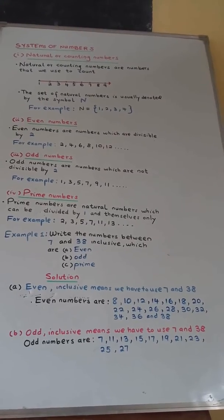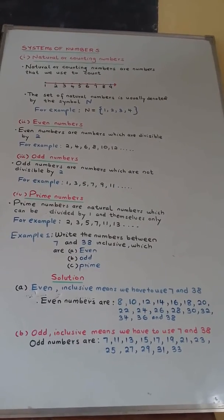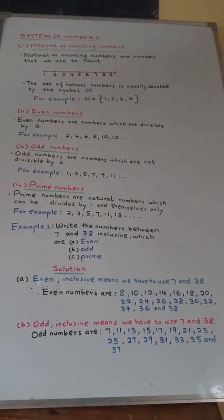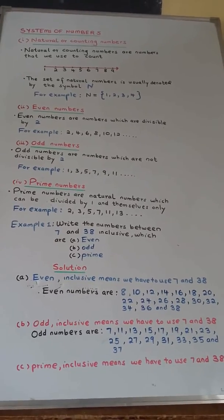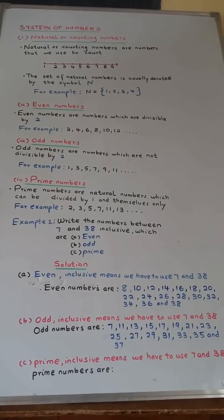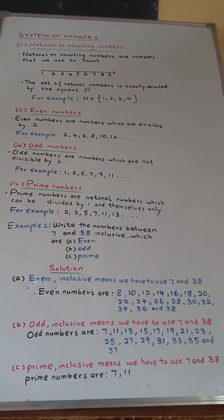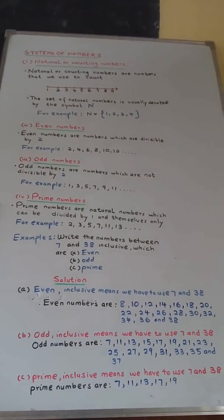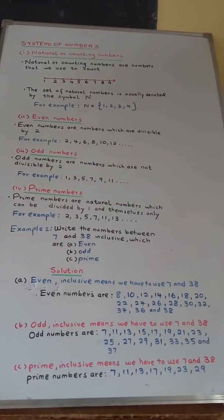27, 29, 31, 33, 35, and 37. (c) Prime. Inclusive means we have to use 7 and 38. Prime numbers are: 7, 11, 13, 17, 19, 23, 29, 31, and 37.